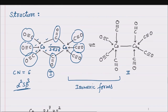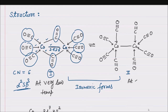Let us discuss the isomeric forms. In solution, two isomeric forms exist in equilibrium. At very low temperature, the bridged structure predominates. As the temperature is raised, the non-bridged structure appears at high temperature. But in the solid state, as per X-ray study, only the bridged structure is applicable.